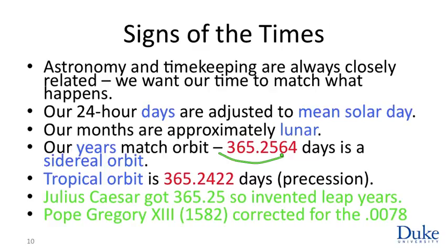The mean tropical year is 365.2422 days. The precession is very slow — it takes 26,000 years — so it's not a large effect over a single year, but it does make the mean tropical year a bit shorter than 365.25 days. This was understood in the 16th century and led to the correction from the Julian to the Gregorian calendar.